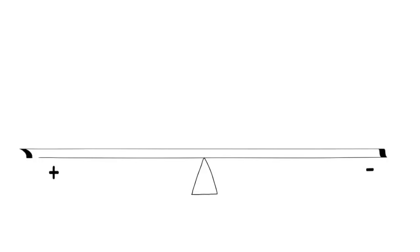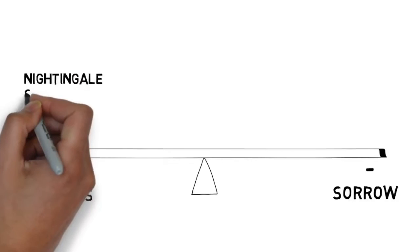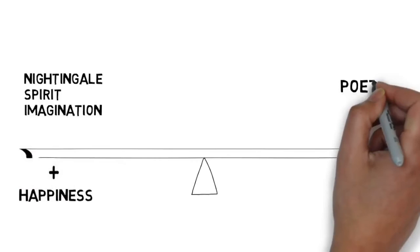But there's something else that Keats finds in the world of the nightingale, something that breaks the spell and brings him back to the real world. Before we go on to the last two stanzas, let's just take a quick look at what we've got so far. There's a basic opposition between happiness and sorrow, with the nightingale representing the world of the spirit and imagination on the side of happiness, and the poet representing the world of sense and reality on the side of sorrow.